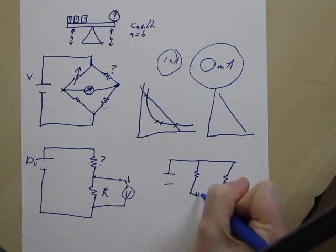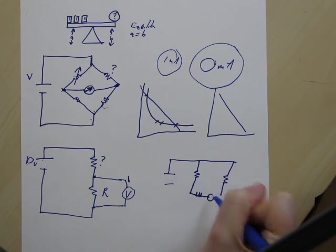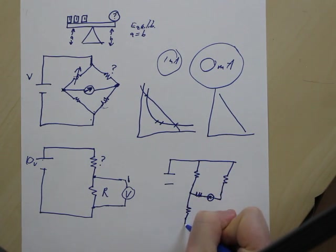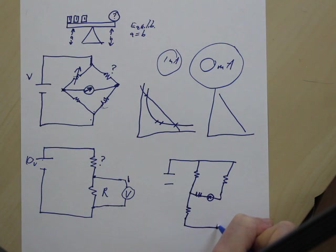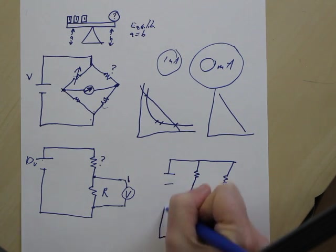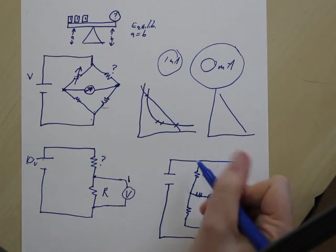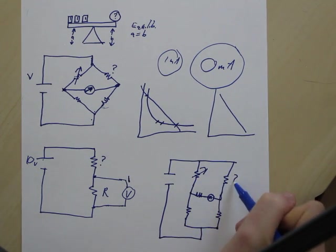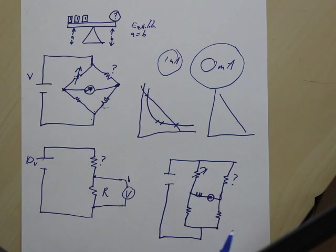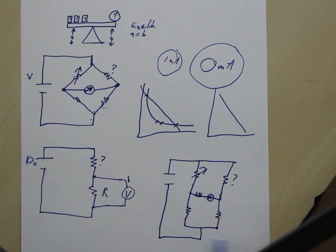Sometimes there's a resistor between the ammeter. I'm just trying to make this look as weird as possible. Do you see how this is the same circuit essentially? We've just made it orthogonal or linear.